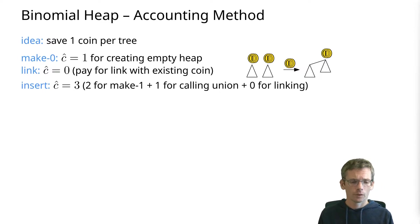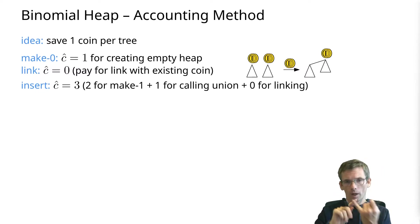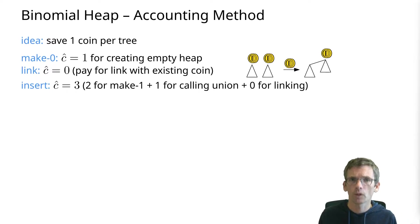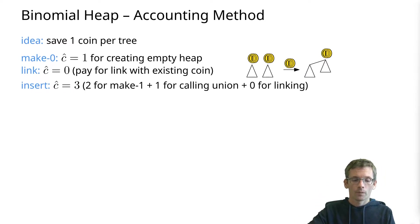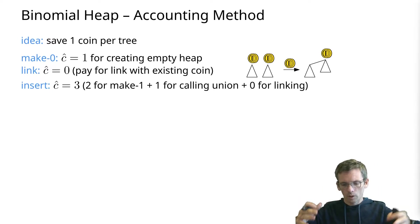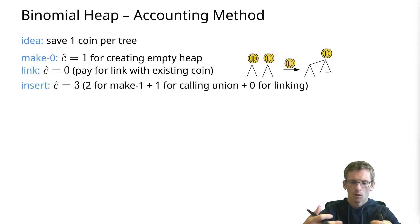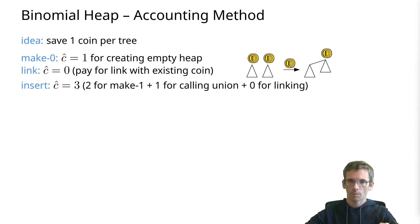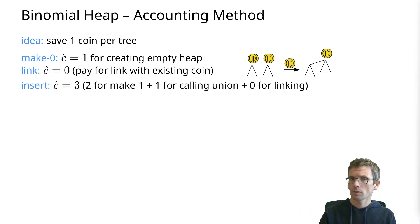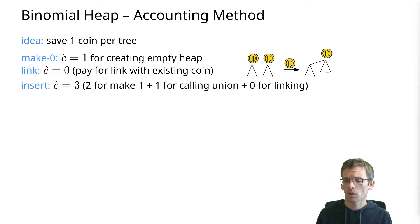For insert, we set the amortized cost to three. We need one for the make-one operation since it's a constant time operation, one to save a coin with that new tree, and one for the initial call of union. In the union we do some linking — possibly several steps — but every linking costs zero coins amortized. So insert can be done with an amortized cost of three.